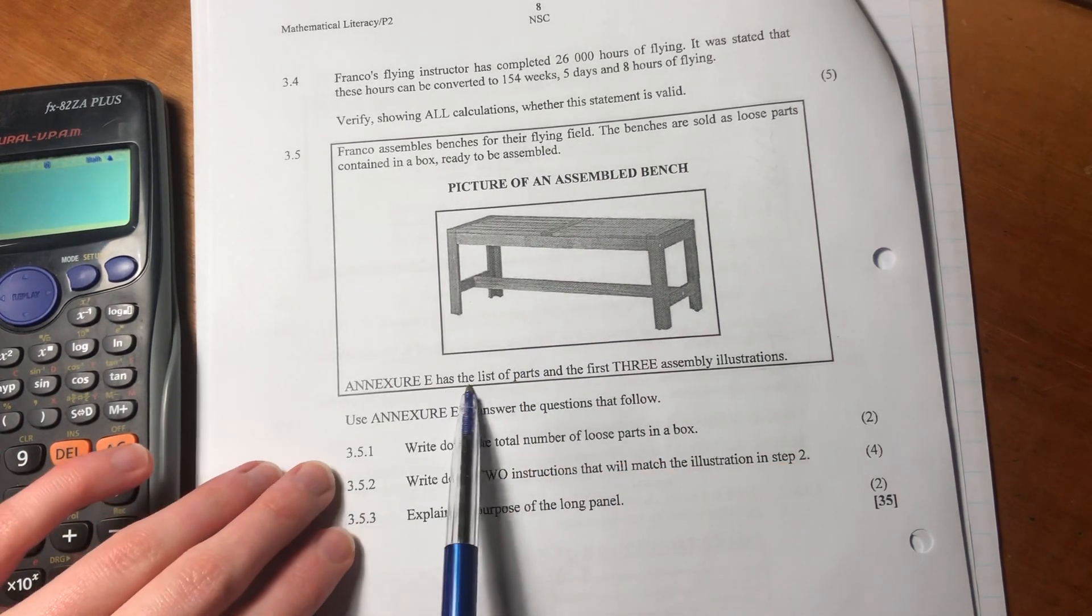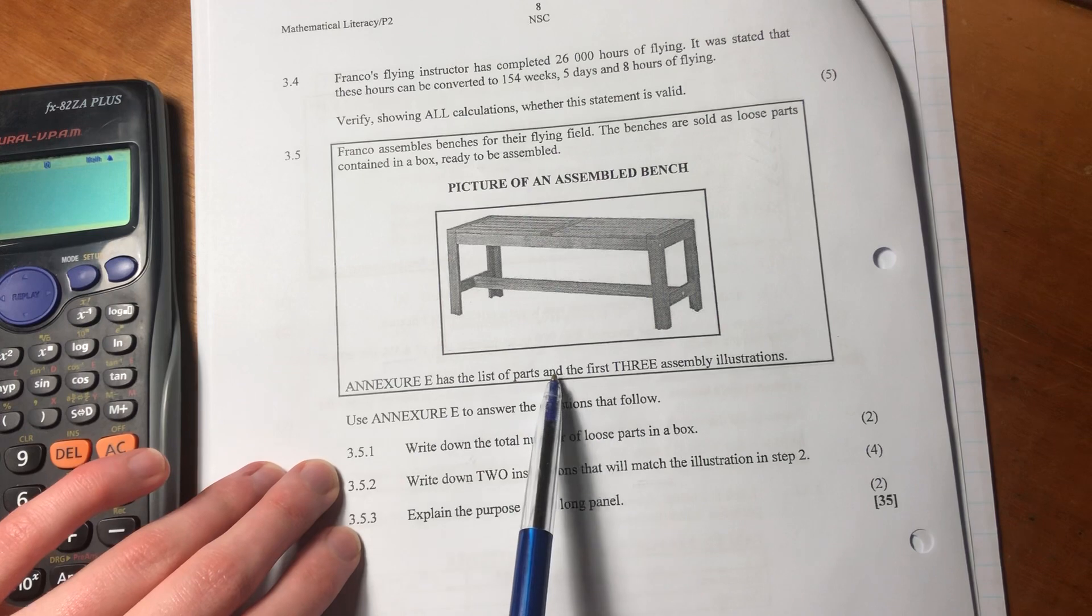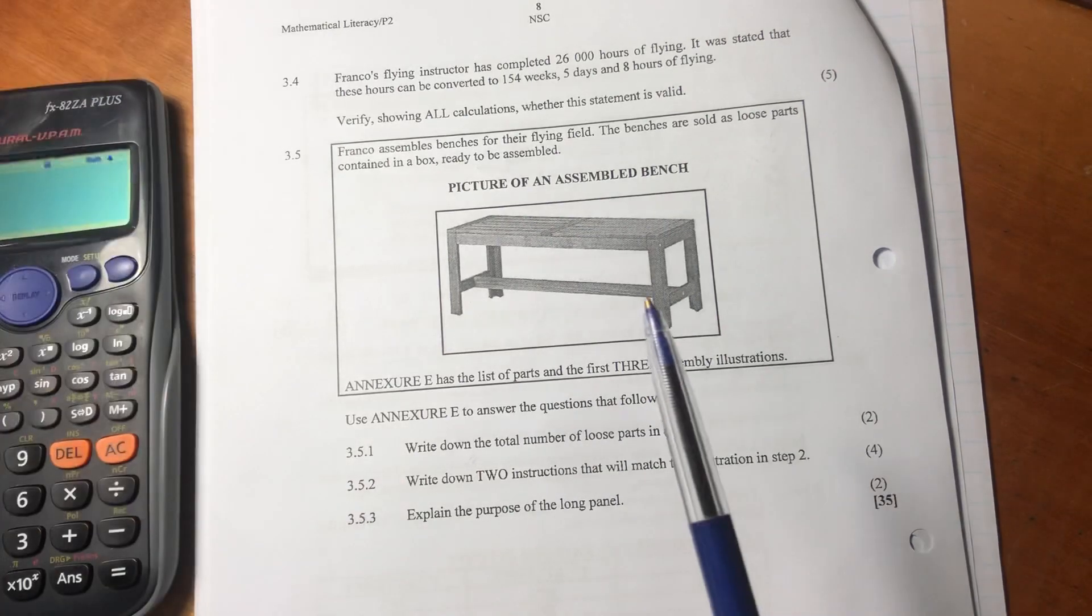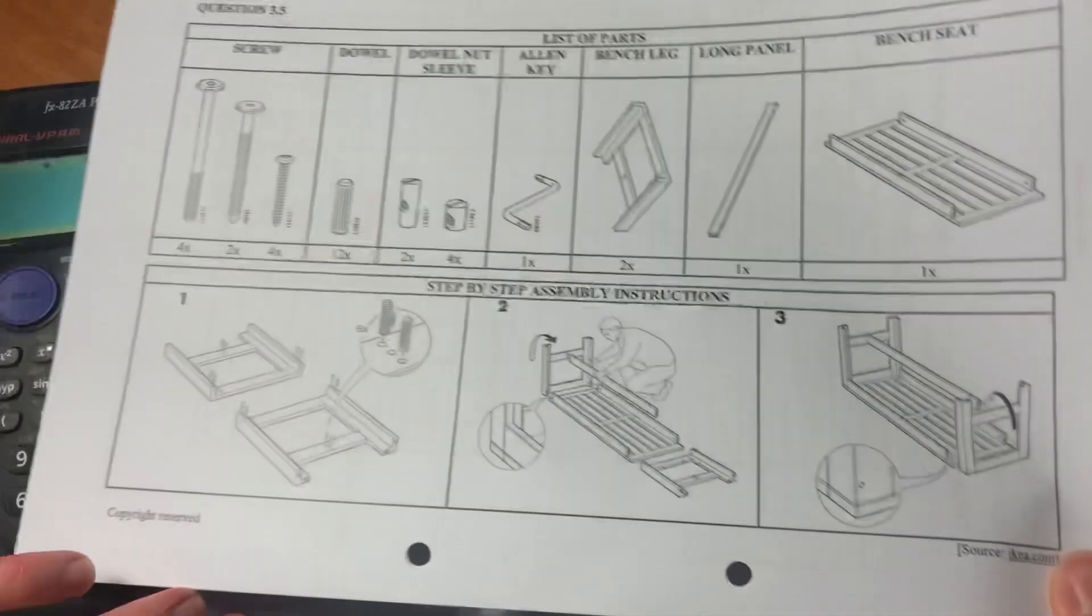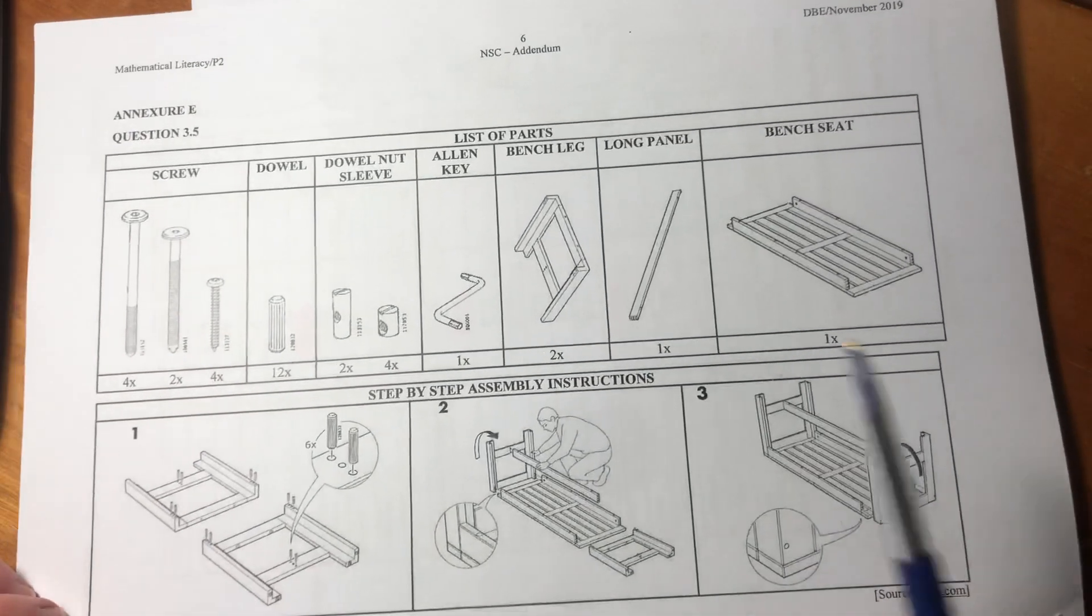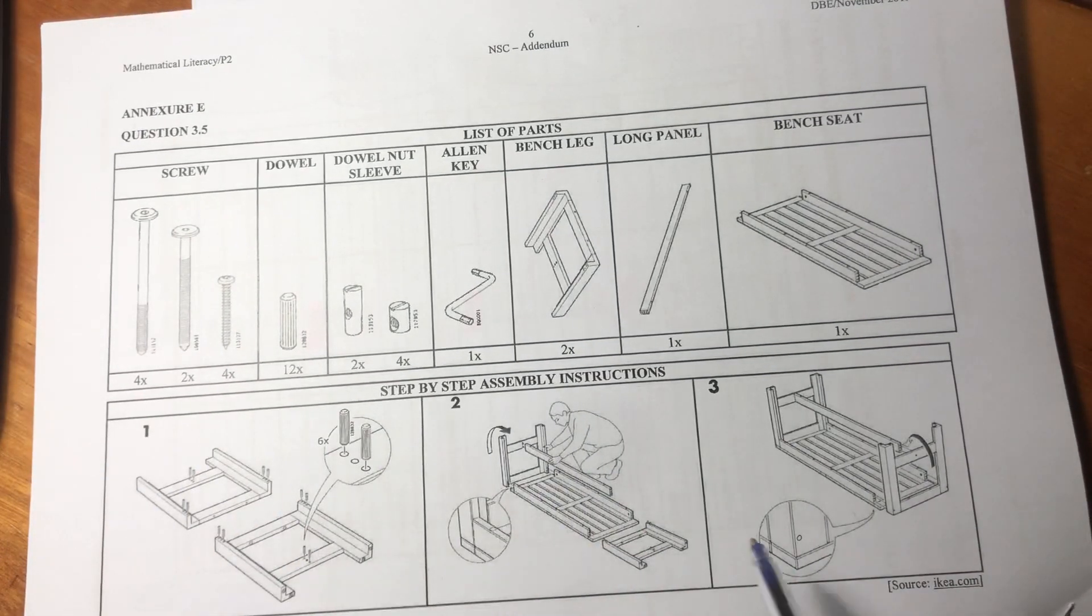It says Annex E has the list of parts and the first three assembly instructions. So remember, these are in our addendum. So here's all the parts and here's some instructions.